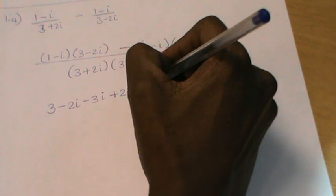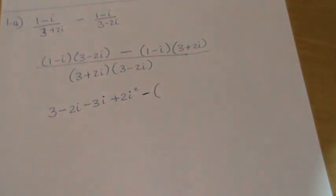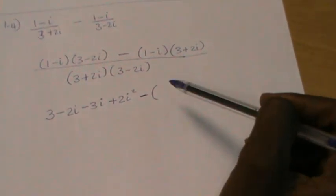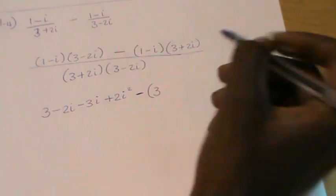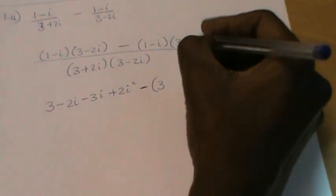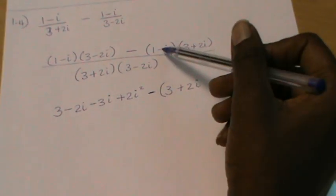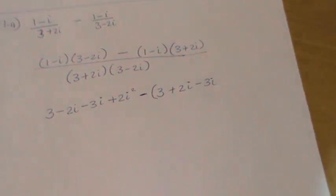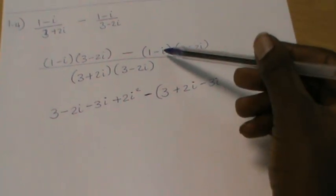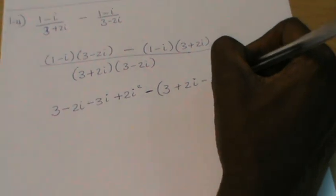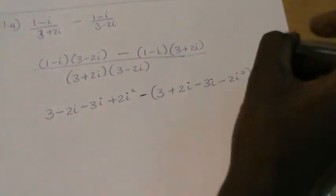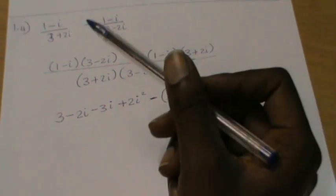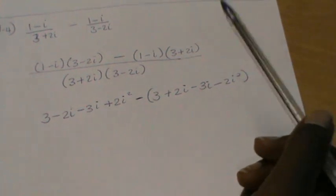Then I move on to the next bracket. I have minus, and I'll keep a bracket here to show that I am subtracting this whole product. So 1 times 3 is 3, 1 times 2i is 2i, then minus i times 3 is minus 3i, and then minus i times 2i is minus 2i squared. The i squared is still there — I haven't worked it out yet. I will do that and then simplify to see if my answer is positive or negative.